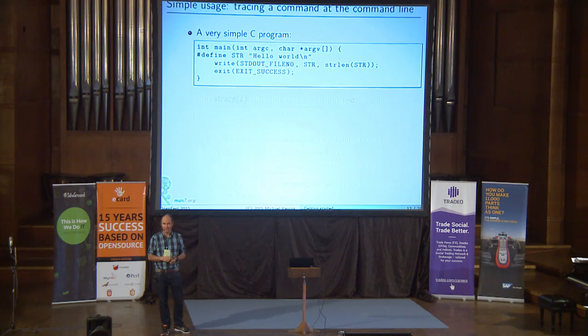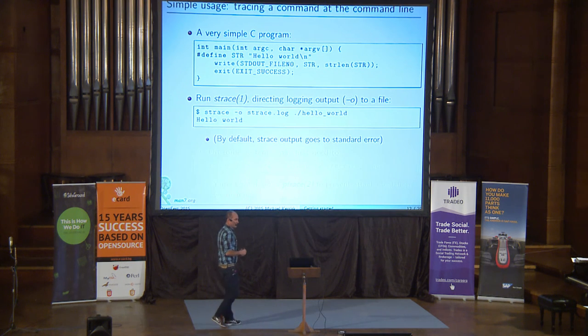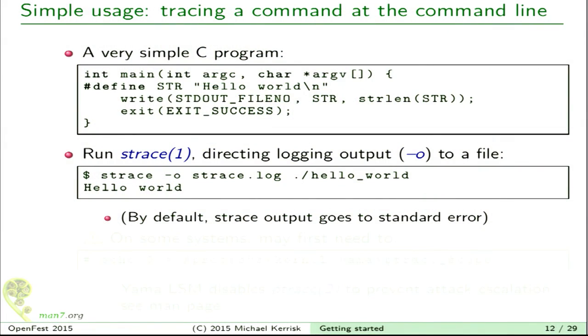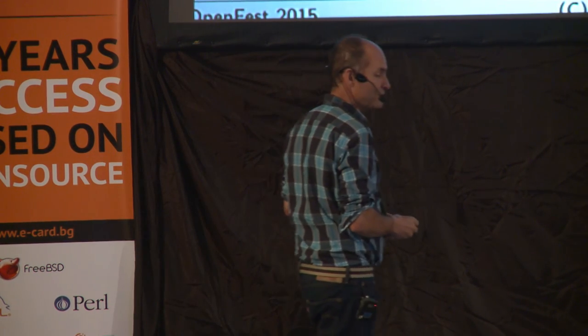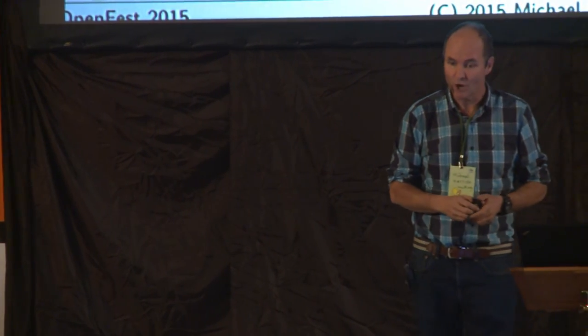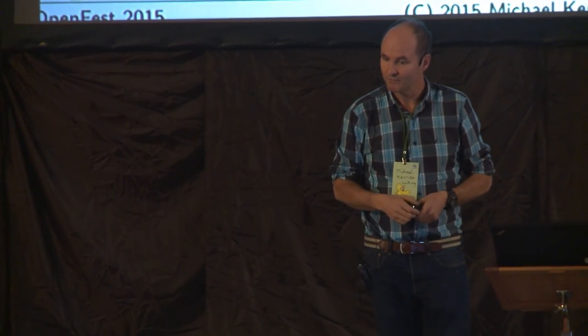Let's look at a very simple C program. All it does is write out a string and then terminate by calling exit. If we want to trace this with strace, by default strace sends all its output to standard error — likely the terminal. Probably we want to send the output to a file so we can look at it later, since the output of strace is usually very extensive — for any interesting program there's likely to be thousands of lines. We can use the -o option to name a log file.